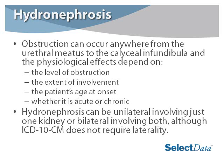Obstruction can occur anywhere from the urethral meatus to the caliceal infundibula, and the physiological effects depend on the level of obstruction, the extent of involvement, the patient's age at onset, or whether it's acute or chronic. Hydronephrosis can be unilateral, involving just one kidney, or bilateral, involving both — although, surprisingly enough, ICD-10 does not require laterality for this condition.